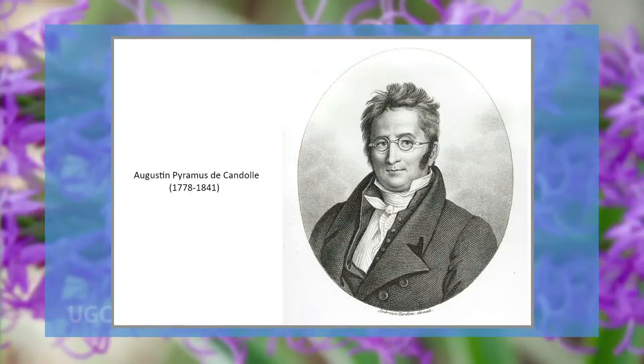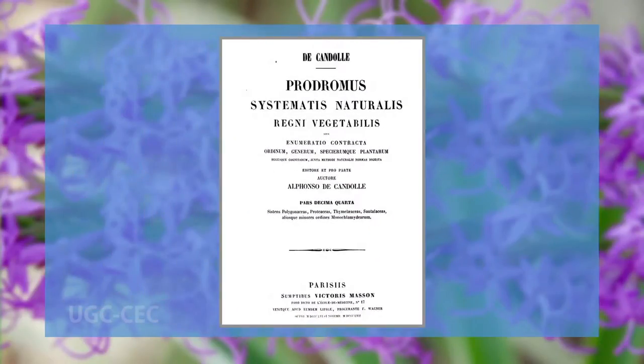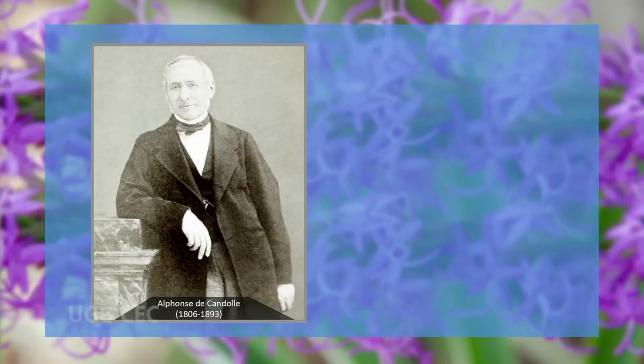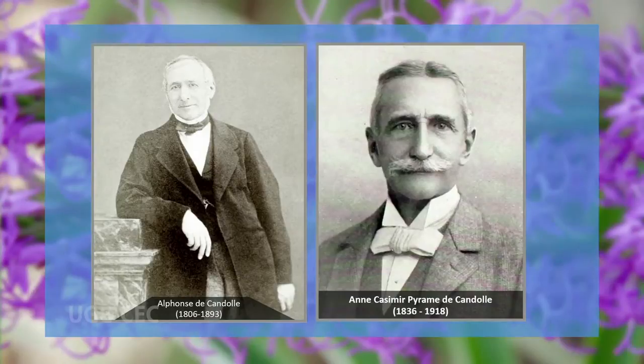From 1816 until his death, Augustin De Candolle worked in Geneva and undertook a monumental work intended to describe every new species of vascular plants under the title Prodromus Systematis Naturalis Regni Vegetabilis, the first volume appearing in 1824. He published seven volumes himself. In this significant monographic work, De Candolle described all the plant species known at that time. Of the total 17 volumes, seven were written and published by A. P. De Candolle himself. The remaining ten volumes were written by his son Alphonse De Candolle and grandson N. A. Casimir De Candolle.